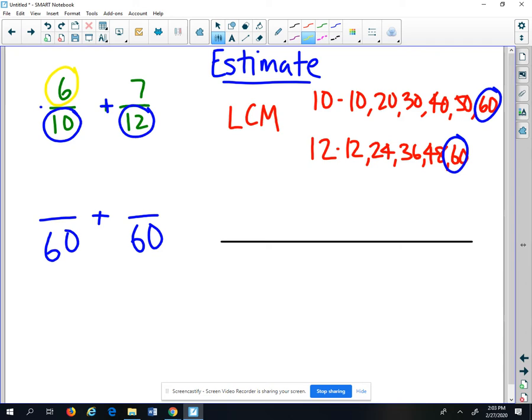Well, over here we have a 6, and that had the denominator of 10. So we say 10 goes into 60 six times, so we're going to multiply that 6 times 6, and we're going to get 36. So my new fraction over there is 36 60ths.